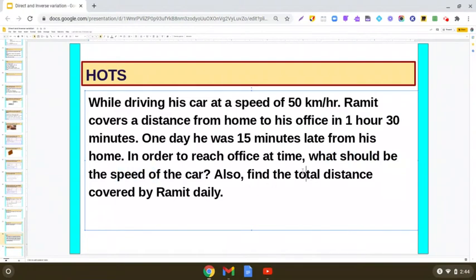Also find the total distance covered by Ramit daily. Dear students, in this question, if you read the first statement, it says Ramit goes from home to his office in 1 hour 30 minutes. So we are given the time. Also, he travels by his car at the speed of 50 km per hour. Now, using these two, can you calculate the distance of Ramit's home and office? What is the distance between Ramit's home and office?